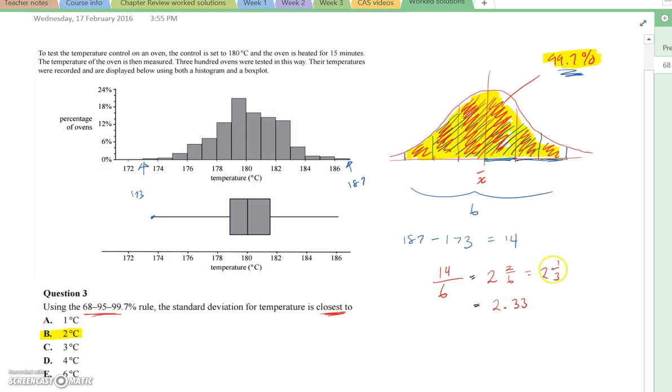If you plug it into your calculator and get a fraction, don't interpret it—press Control + Enter, and that will give you the decimal equivalent. Then we look at our multiple choice answers, and the one it's closest to is 2 degrees. So the answer is B.